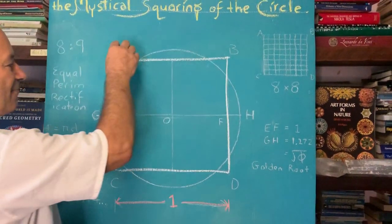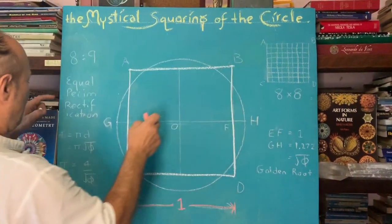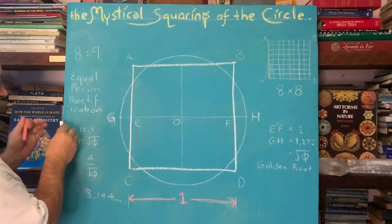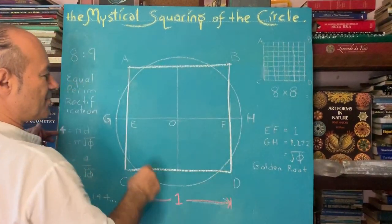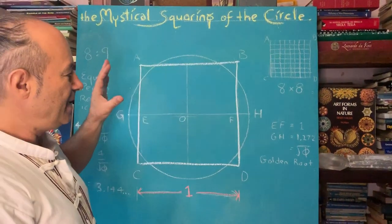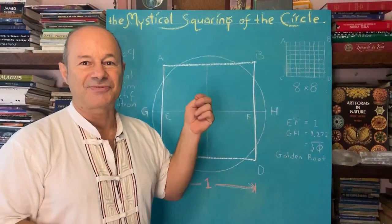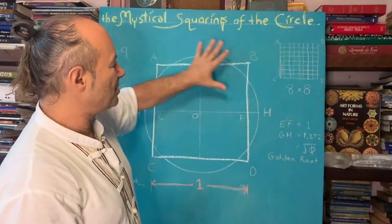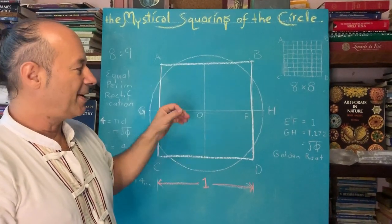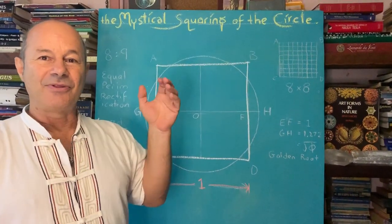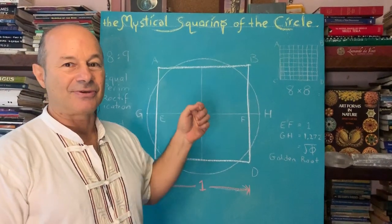And we know that the perimeter of that square must be four. So we know that the perimeter of this square is four. So in ancient times they had two types of squaring of the circle. One was based on the square area, but what we're concerned with today is actually the perimeters of the square and the circumference of the circle.